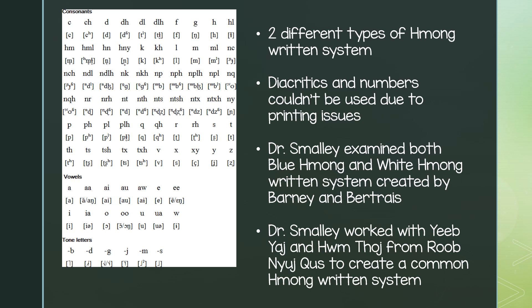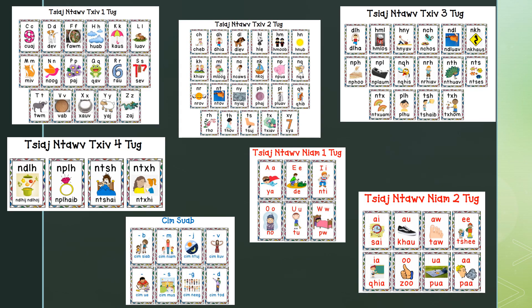An interesting fact about Dr. Smalley was that he didn't speak Hmong, but because he was a linguist, he was trained to hear the difference in sound and was able to associate those differences with letters. And you would assume that it took several years or a very long time to create the Hmong RPA, but actually it took them just five days.